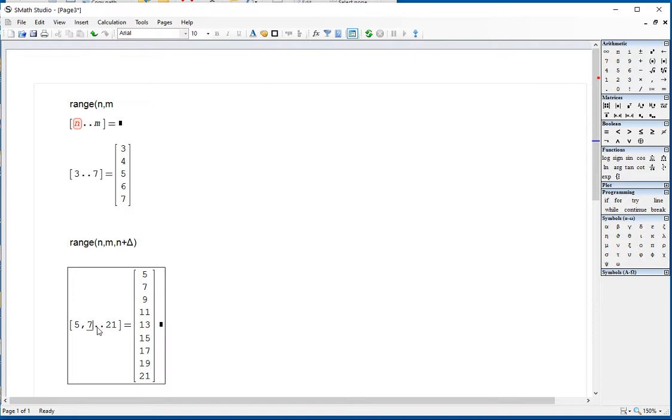So you have to indicate that the second element here, which is actually the third element that you type, is the number that will follow the first number with the given increment. And so that's how the range functions work.